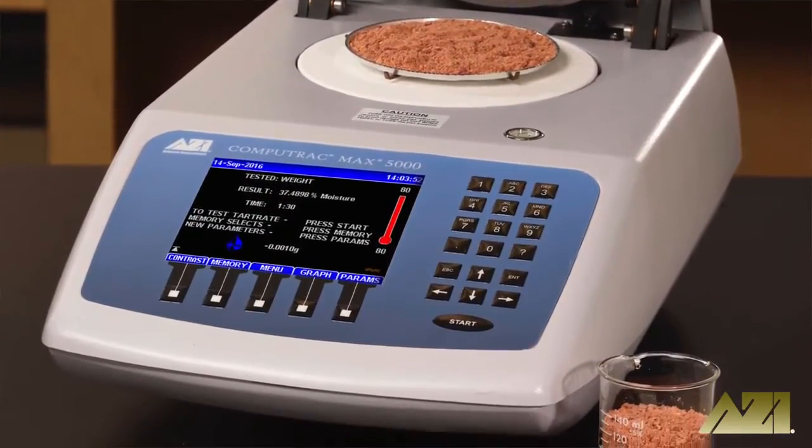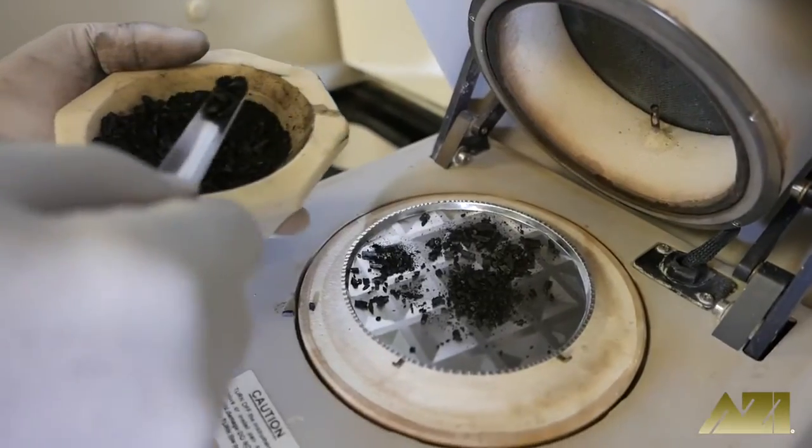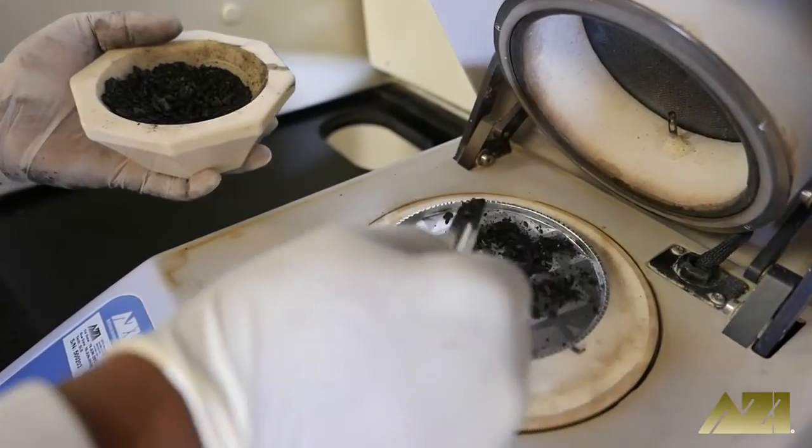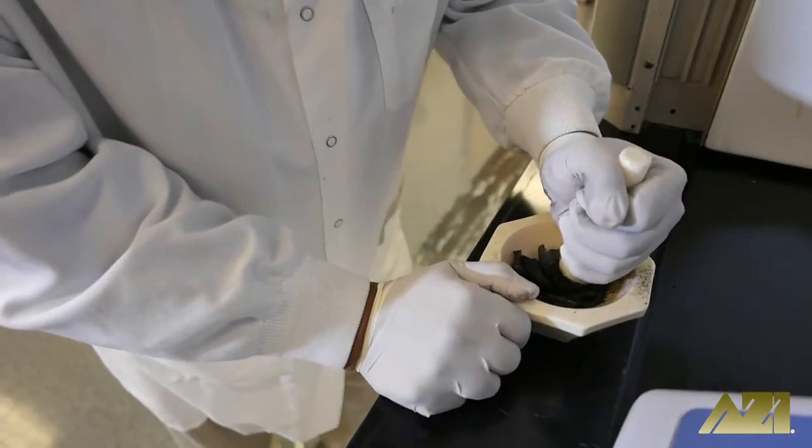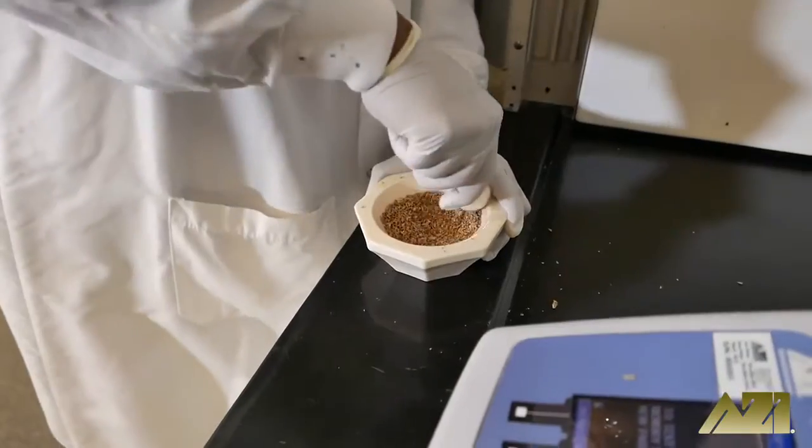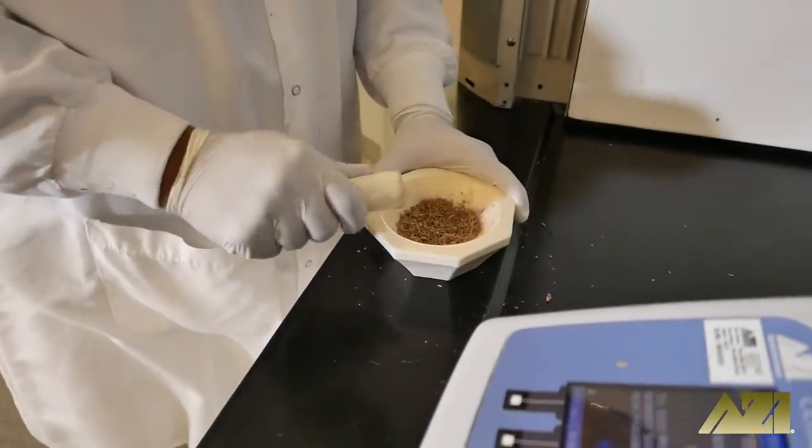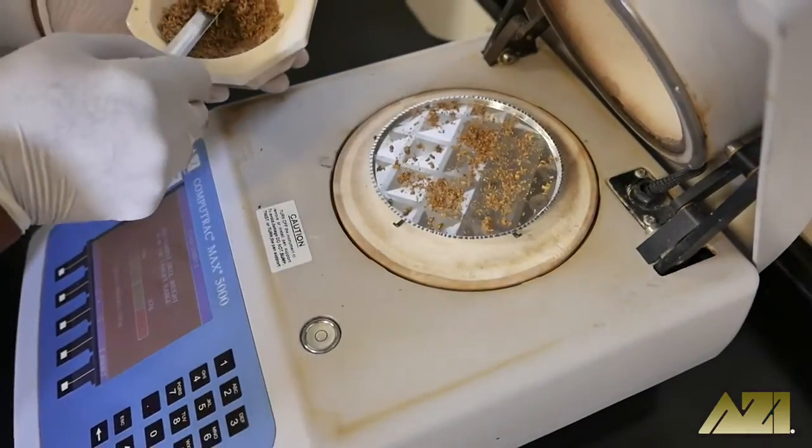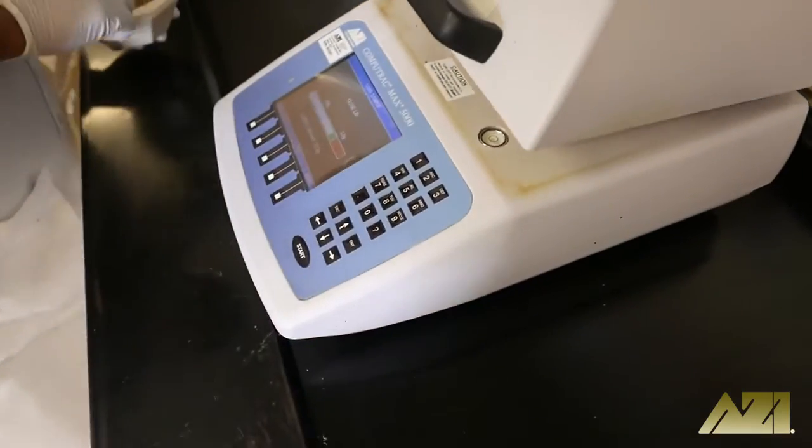After placing the sample pans on the pan support, we zeroed the balances and placed an appropriate amount of sample on each pan. Both the wood pellets and the lump charcoal were ground using a mortar and pestle to increase their surface areas. Once the samples were loaded, we closed the lid on each analyzer and began the test.